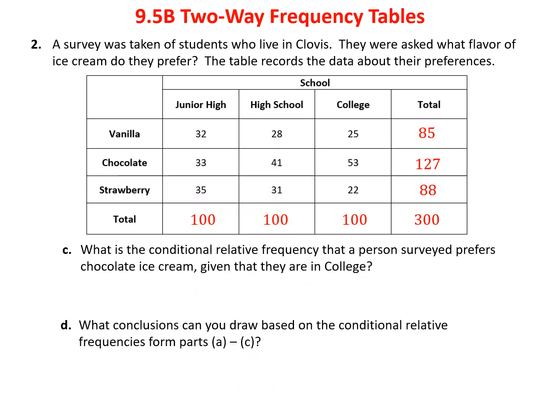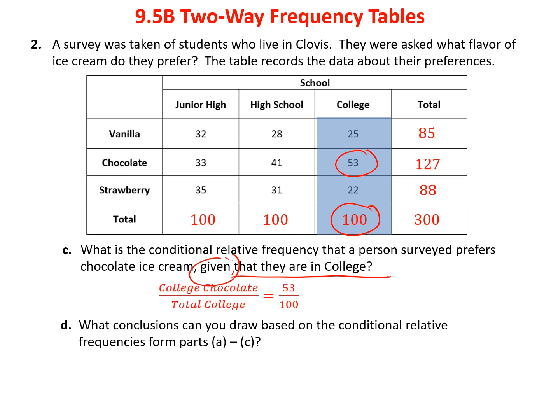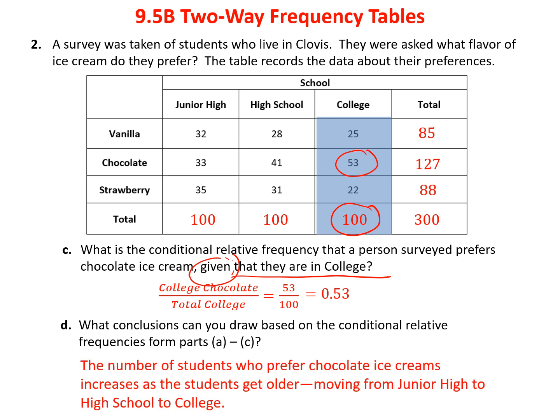Given they were in college, they're in the third column. The number who preferred chocolate was 53 out of 100 surveyed in college. So if they're in college, 53% liked chocolate. You can tell from that conclusion that as students move from junior high to high school to college, more students prefer chocolate than vanilla or strawberry. There was a clear increase in the number of people who preferred chocolate as they grew older.